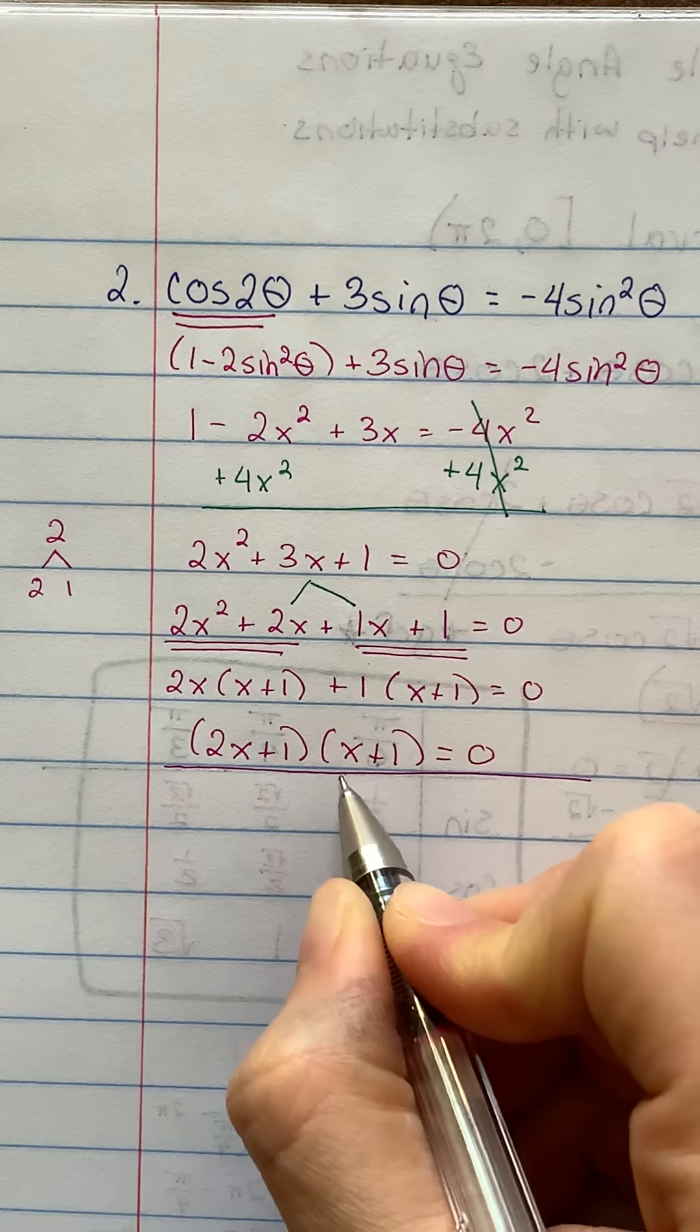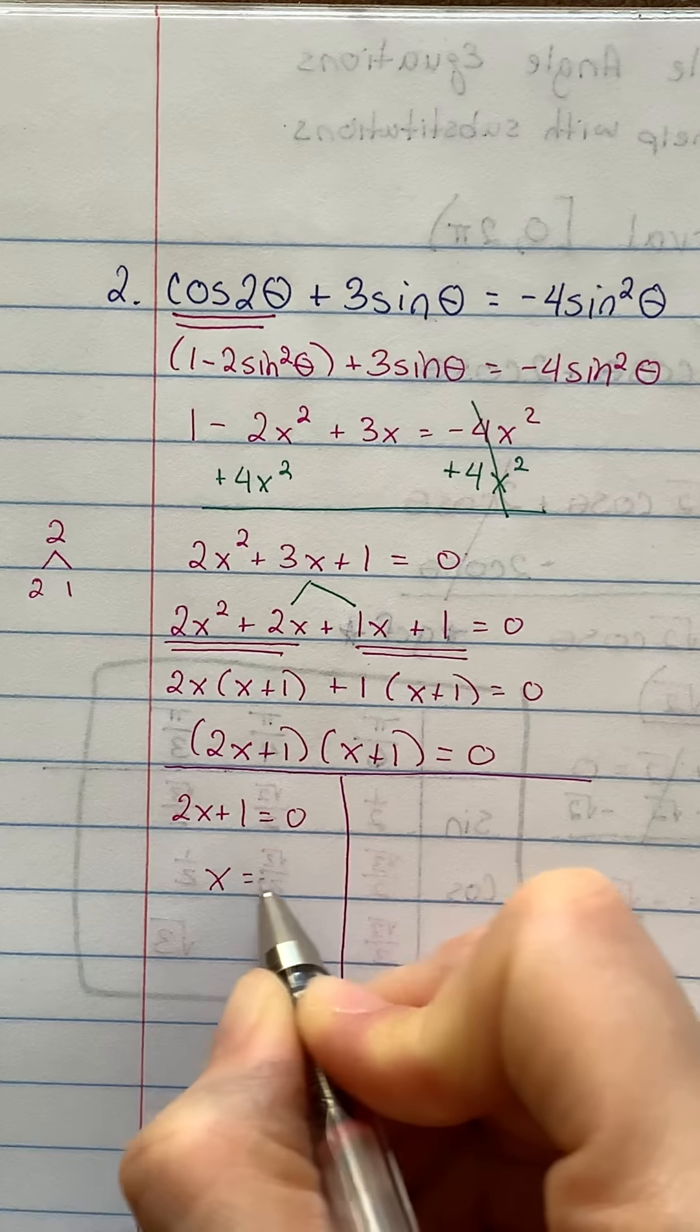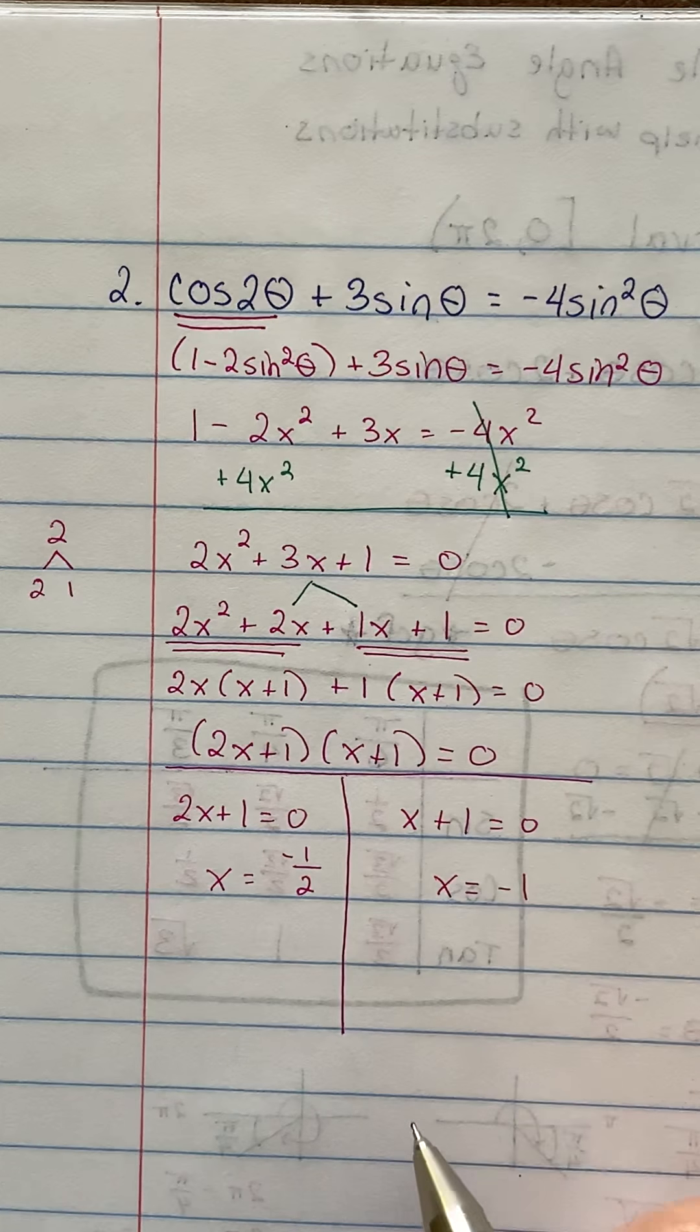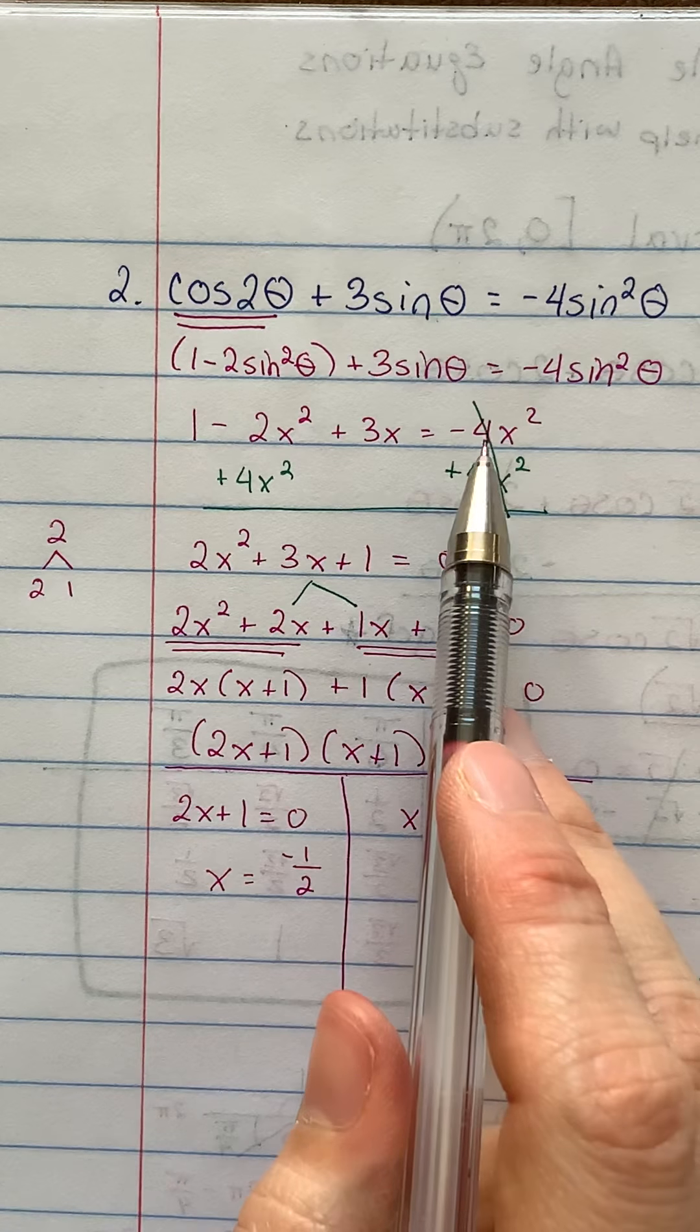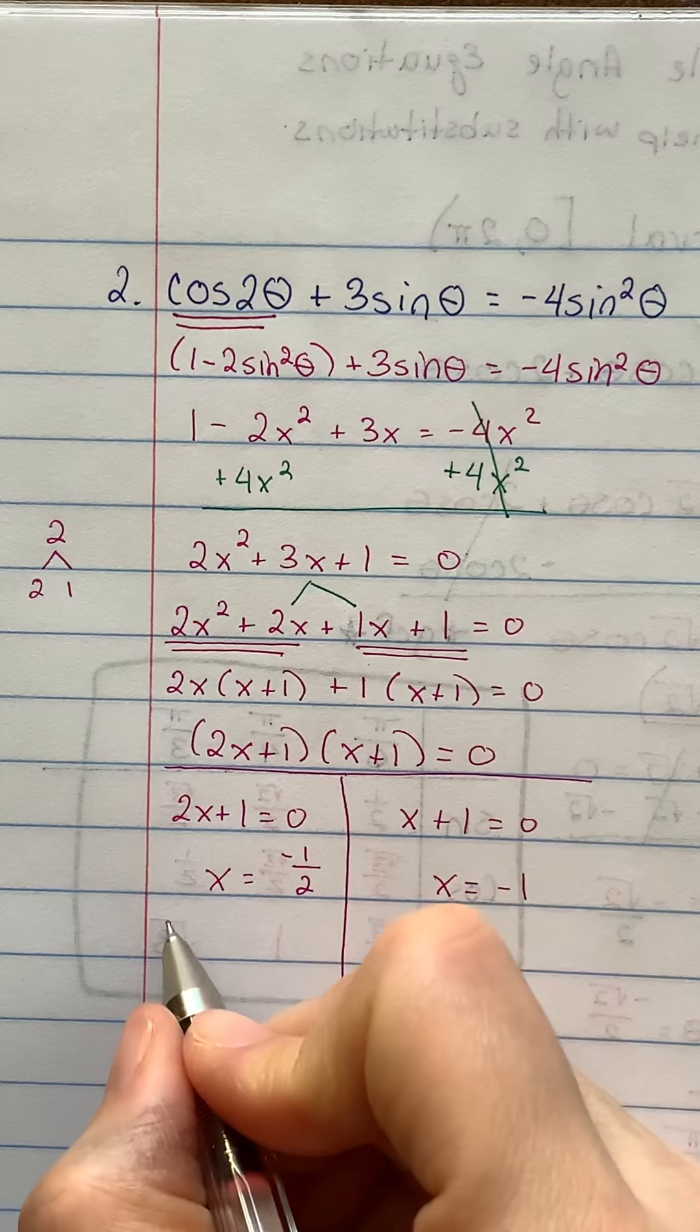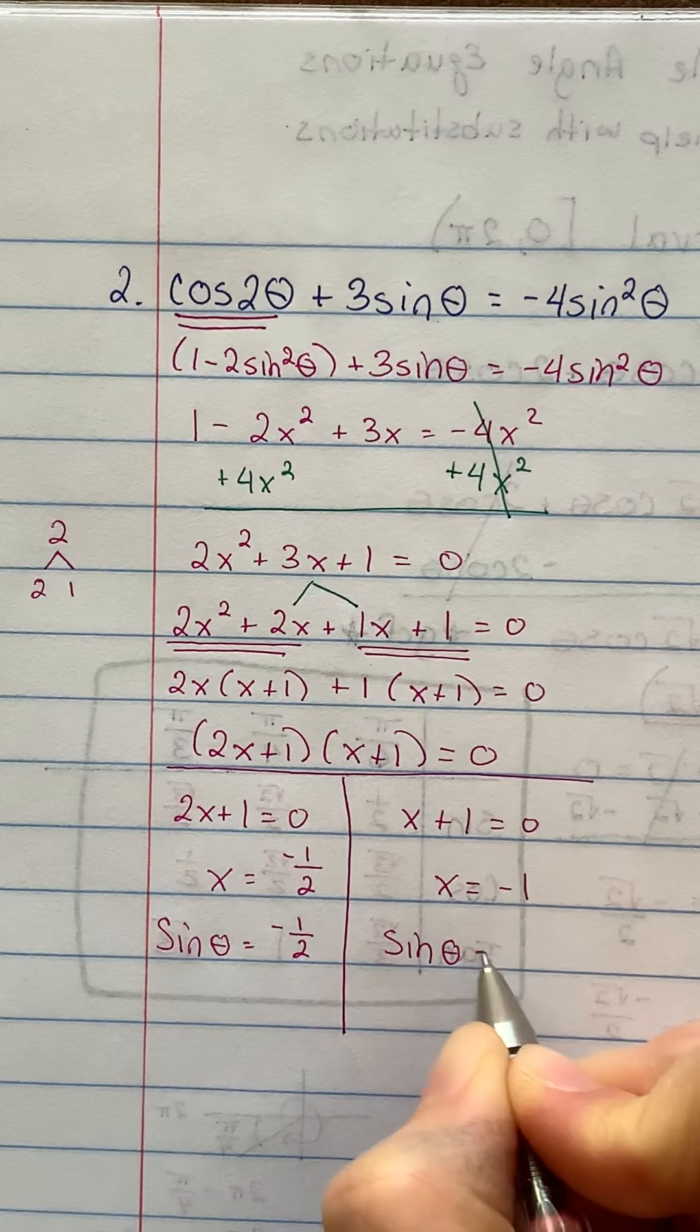All right, so to finish this question off, I'm going to go ahead and make a t-chart. On the left-hand side, I get 2x plus 1 equals 0. Solve that and you get x equals negative 1 half. On the right-hand side, I get x plus 1 equals 0. Solve that and you get x equals negative 1. It would be nice if I could finish there, but I can't because the original question doesn't have x anywhere. I subbed x in for sine, so that means I've got to put sine back in here. Sine theta is equal to negative 1 half and sine theta is equal to negative 1.